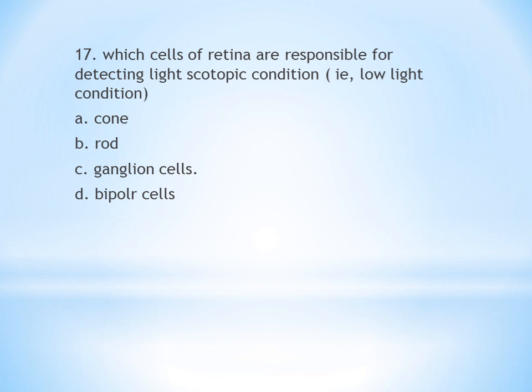Which cells of the retina are responsible for detecting light in scotopic vision — that is, low light conditions? A. Cones. B. Rods. C. Ganglion cells. D. Bipolar cells. The retina has light-sensitive cells: rods and cones. Cones are for color vision — C for cones, C for color. Rods are for low light and dark vision. So the answer is B, rods.